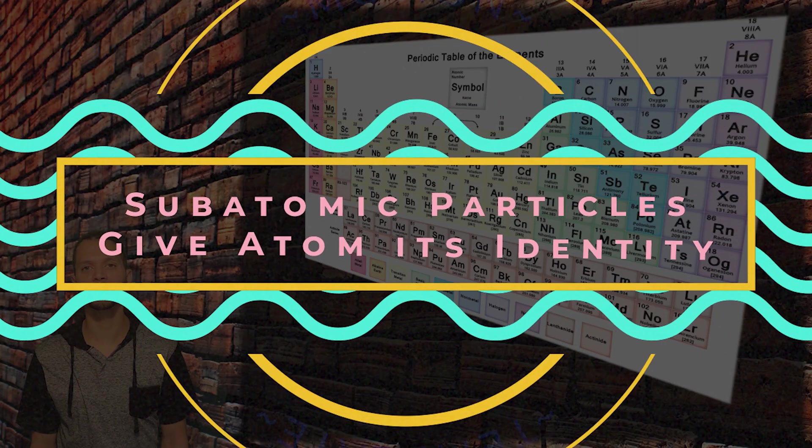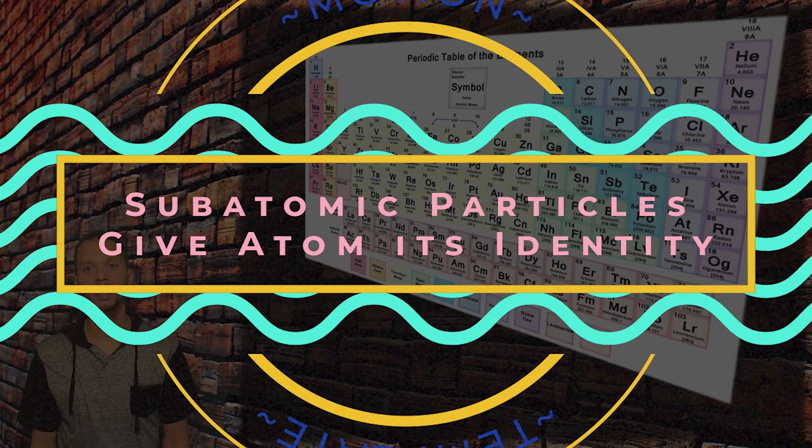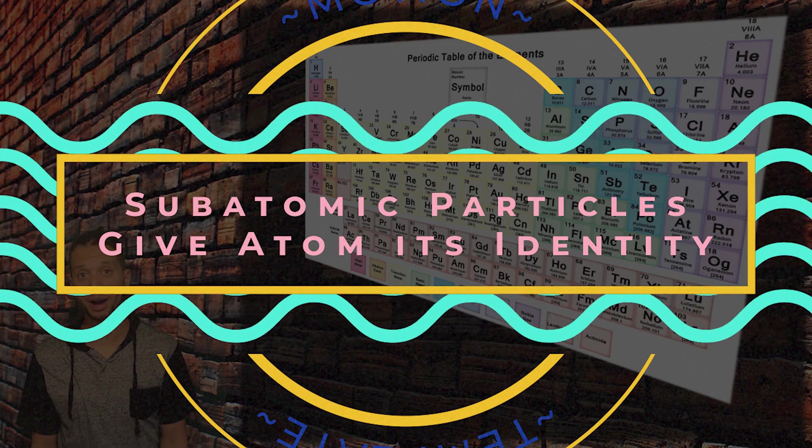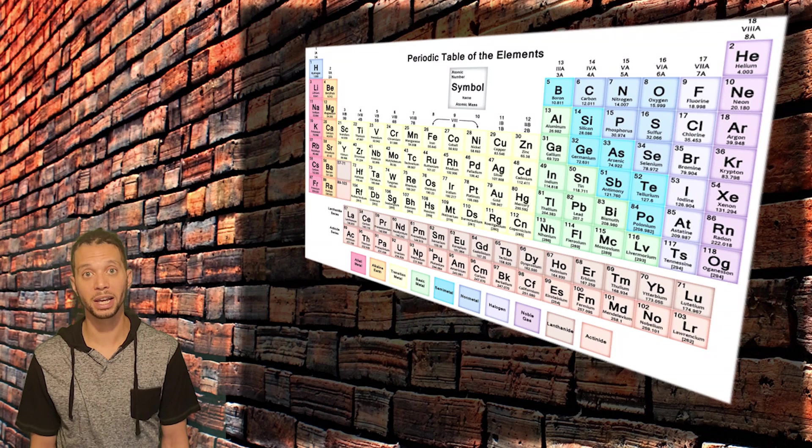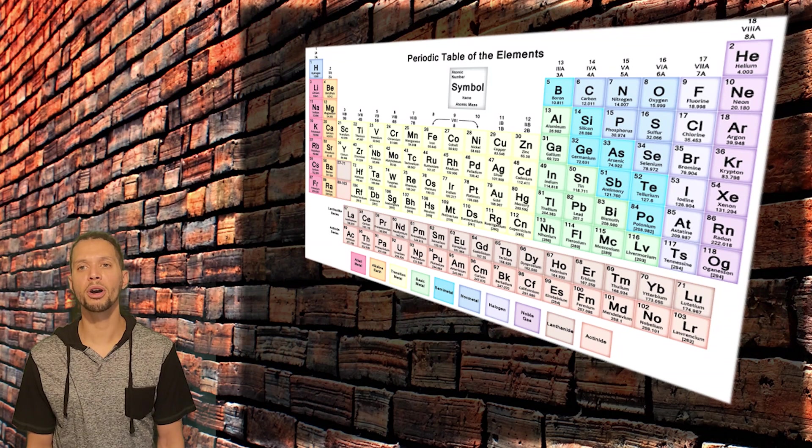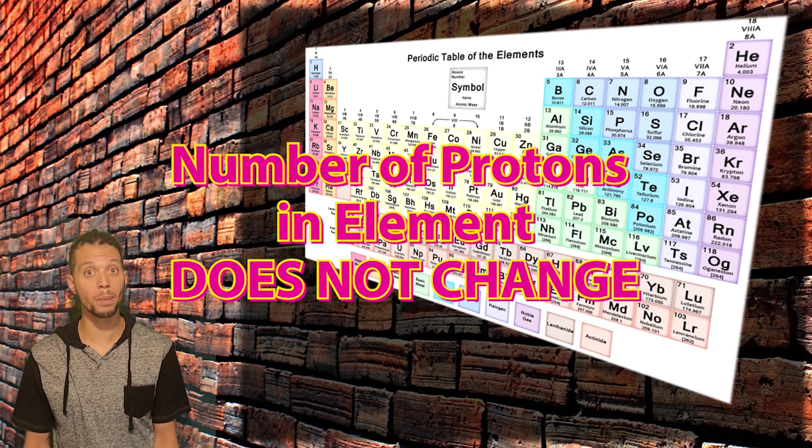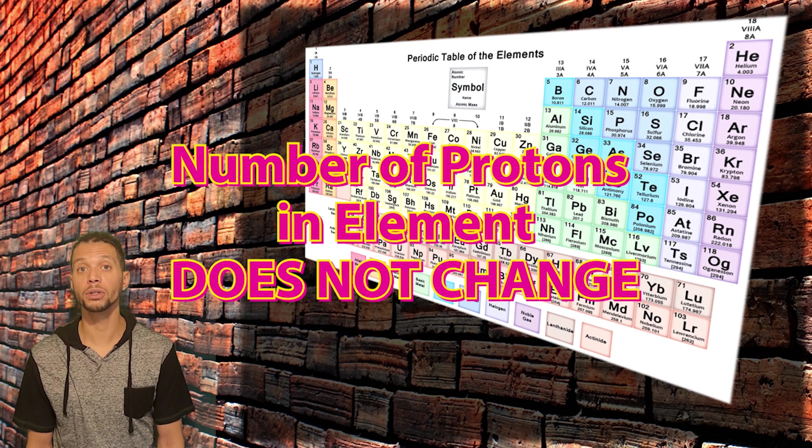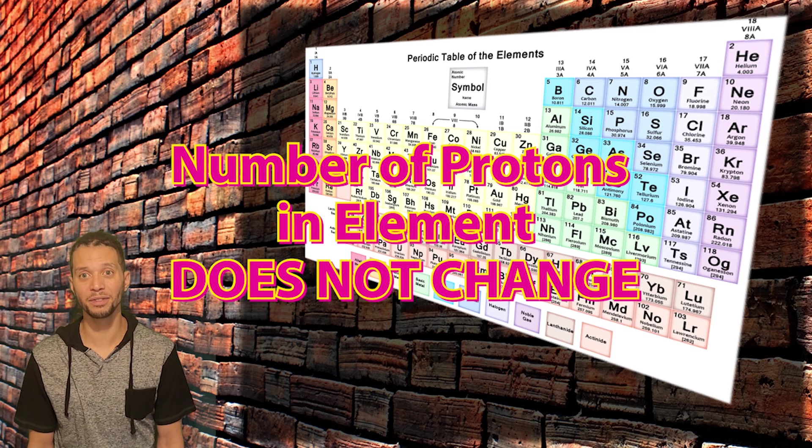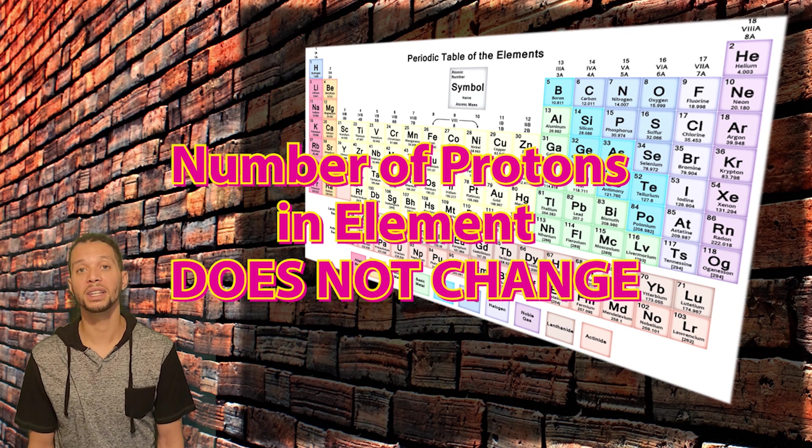The different combinations of the subatomic particles in an atom give that atom its chemical properties that we observe in matter every day. The subatomic particle whose amount in an atom does not change no matter what, and therefore determines the chemical behavior of that element, is the proton.